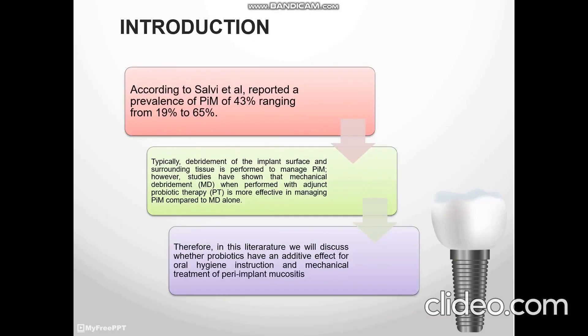According to Salvi et al., the prevalence of peri-implant mucositis is 43%, ranging from 19% to 65%. Standard mechanical debridement of the implant surface and surrounding tissue is performed to manage peri-implant mucositis. However, studies have found that mechanical debridement when performed with adjunct probiotic therapy is more effective in managing peri-implant mucositis compared to mechanical debridement alone.